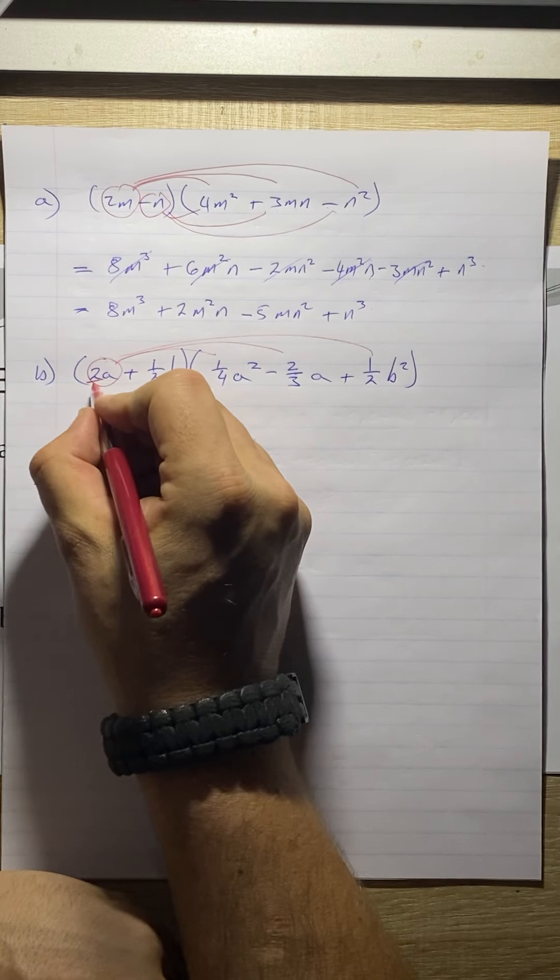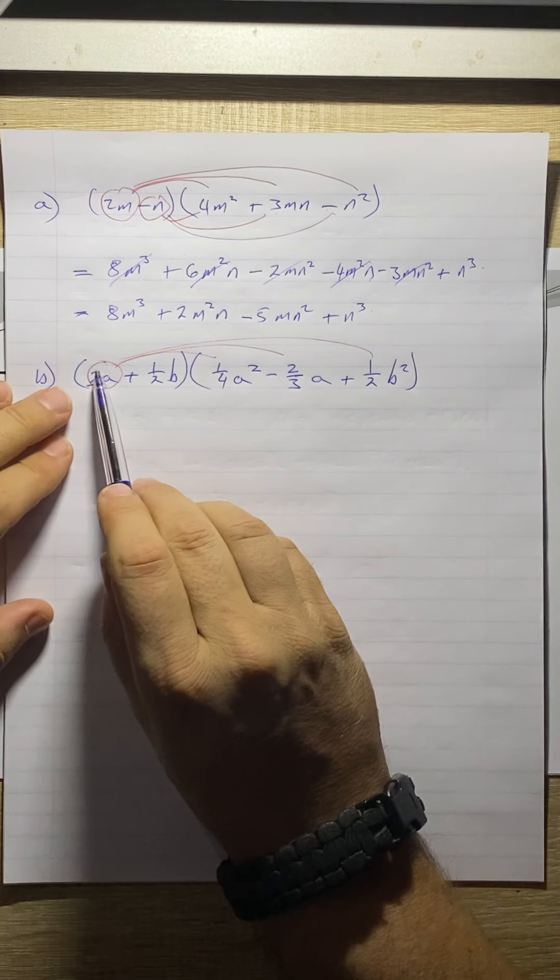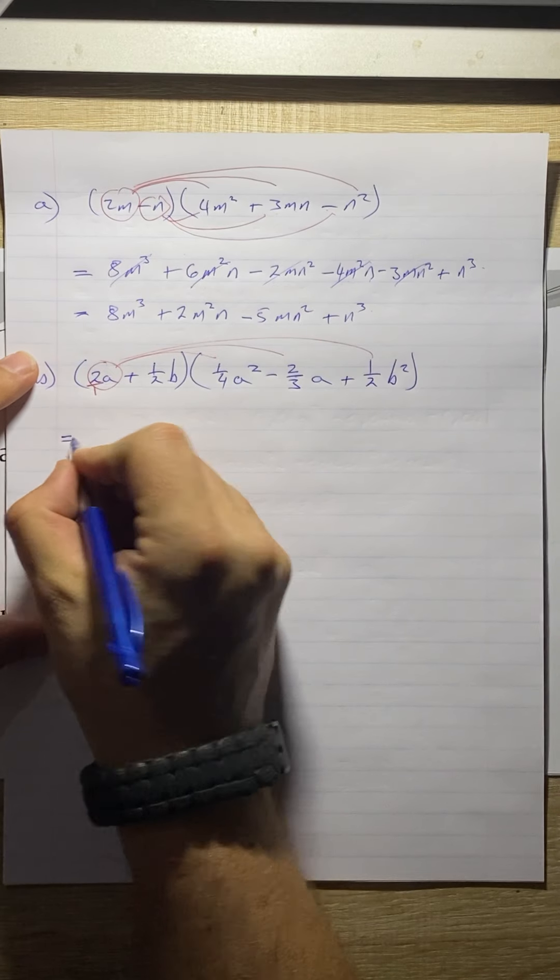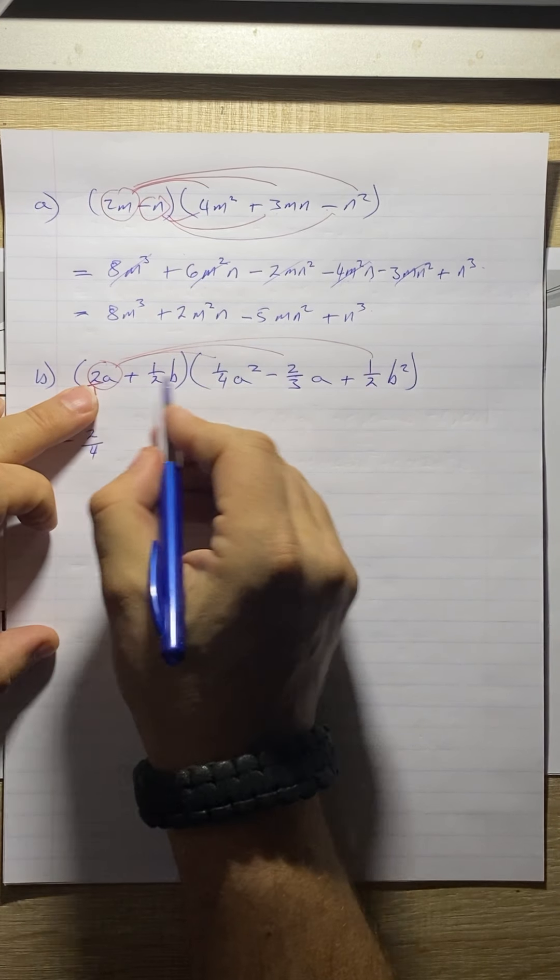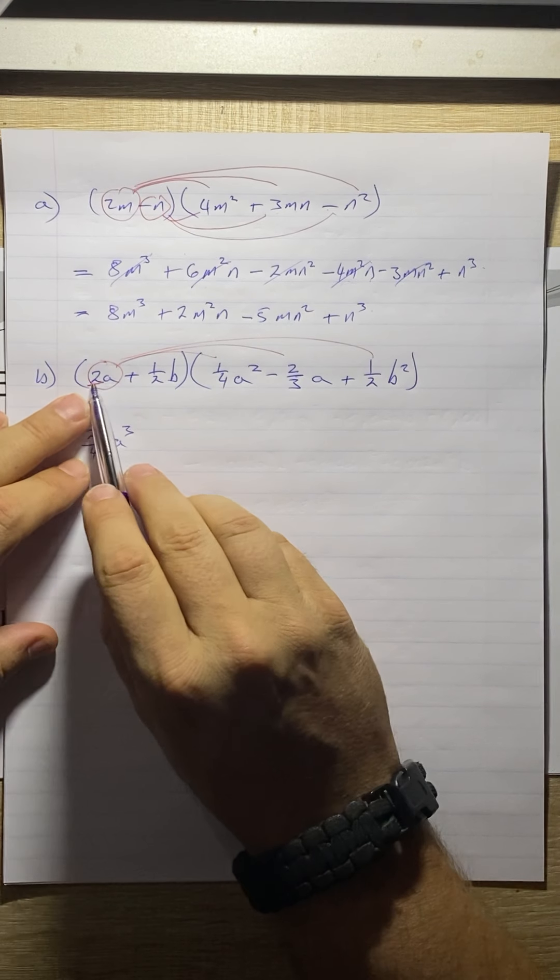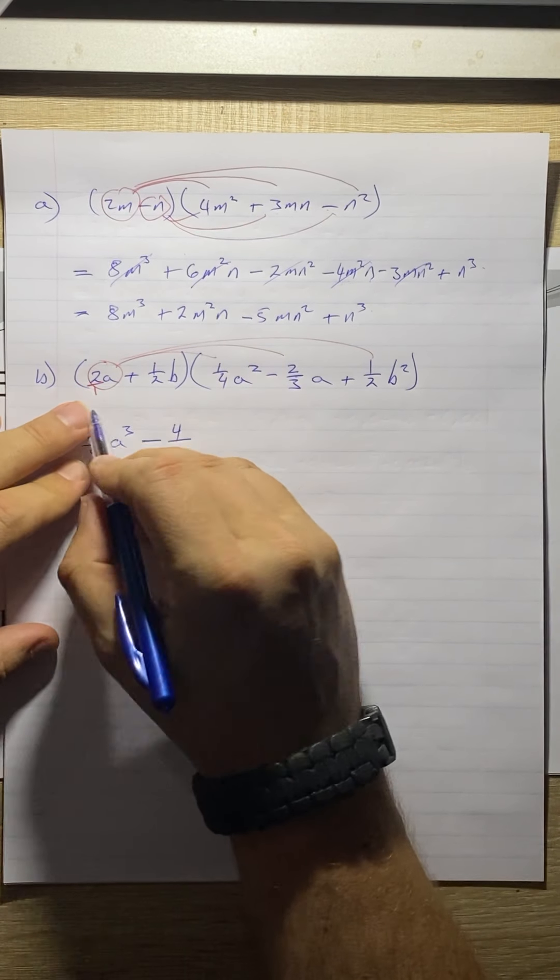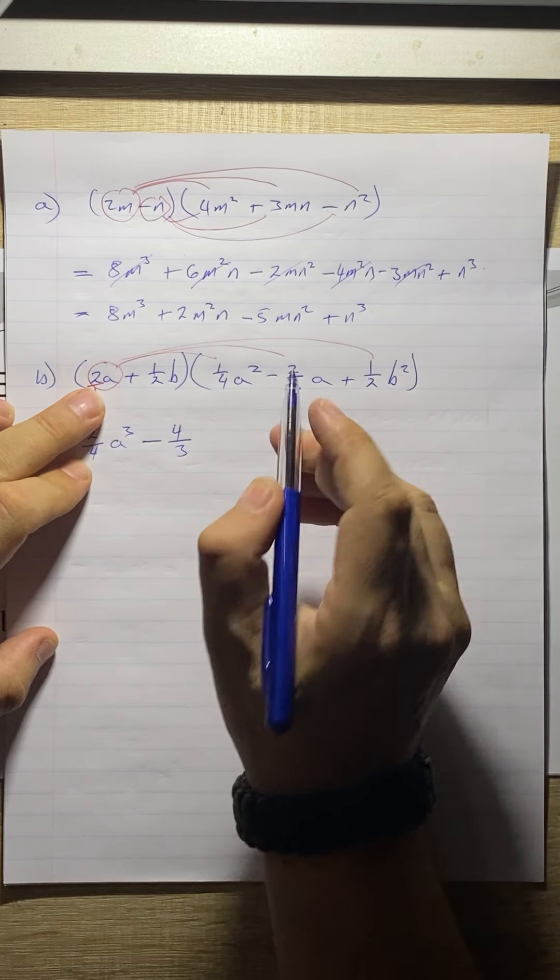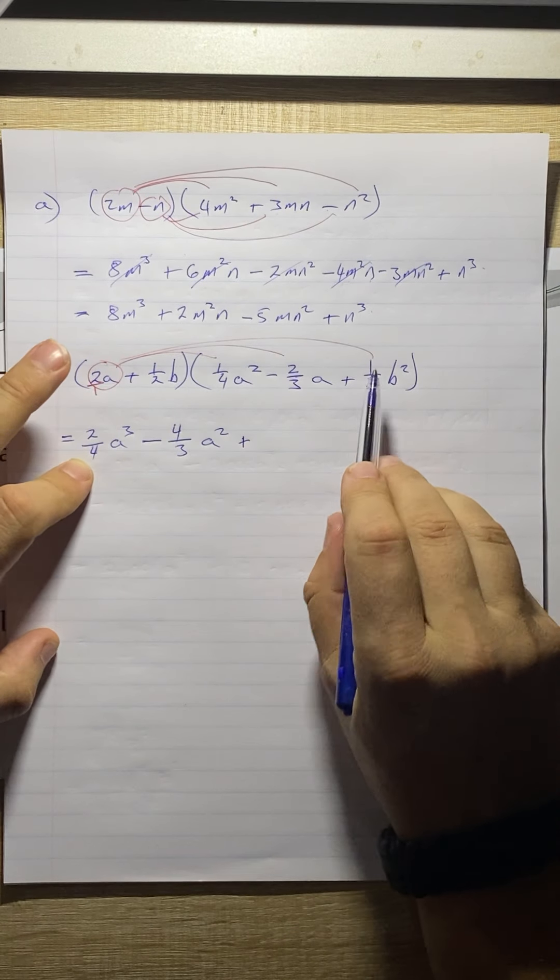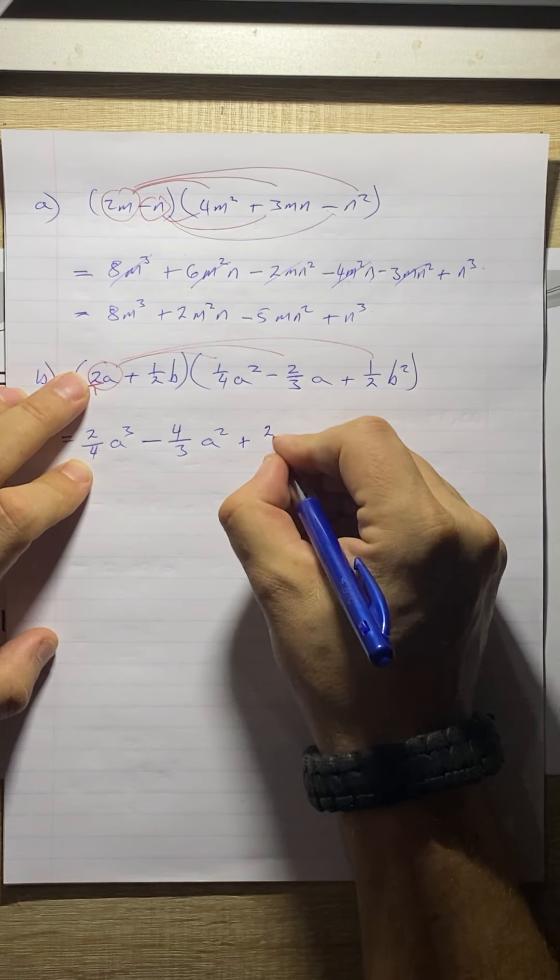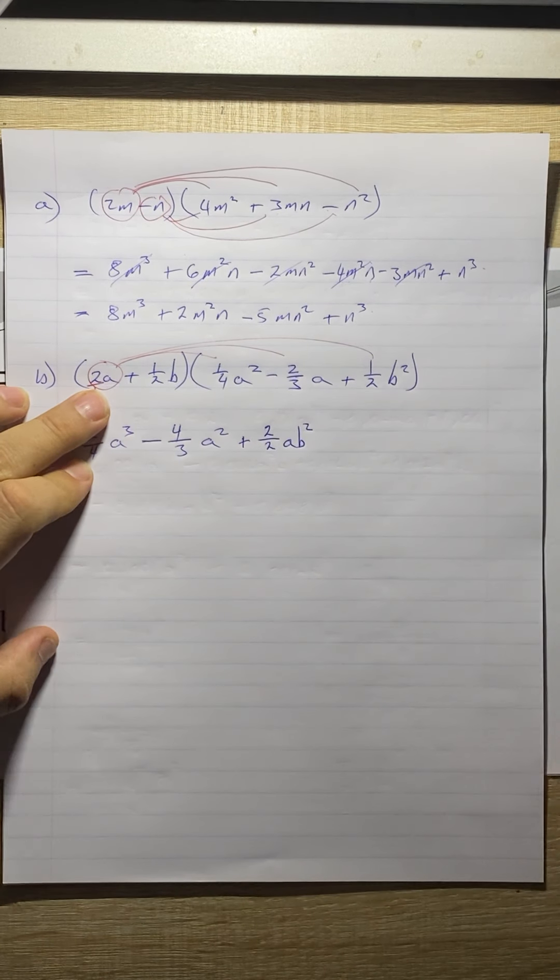Now remember that this is a 2 over a 1. And when you're multiplying fractions, do top with top, bottom with bottom. So over here we've got 2 times 1 gives us 2, and then 1 times 4 gives us 4, a times a squared, a cubed. Next one, top with top, bottom with bottom. So it's going to be a minus. 2 times 2 is 4, over 1 times 3 is 3, a times a is a squared. Then going to give us a positive. Top with top, bottom with bottom. So 2 times 1 will give us 2, over 1 times 2 is 2, a times b squared is a b squared. Okay, so that's that one done.